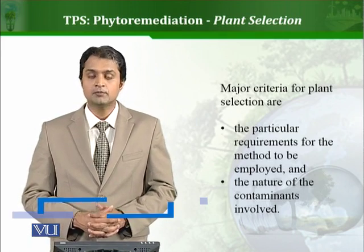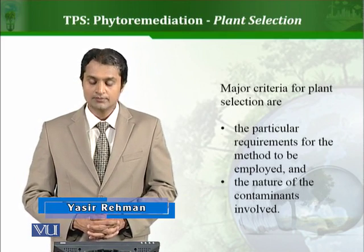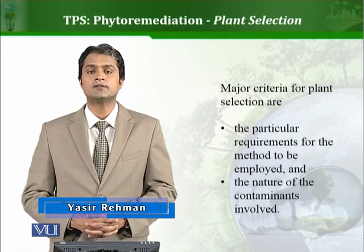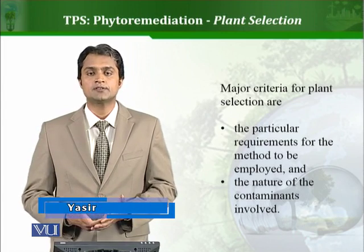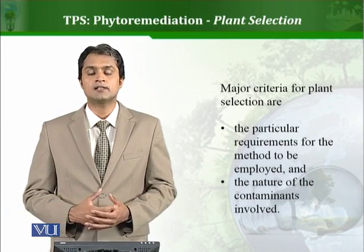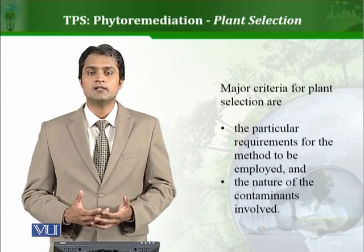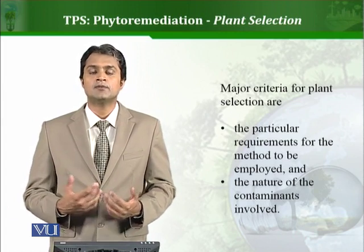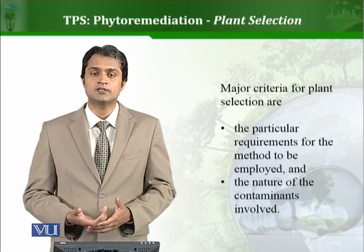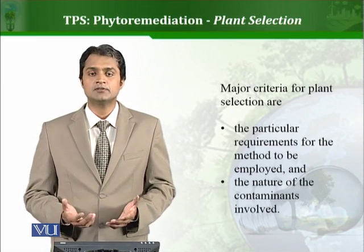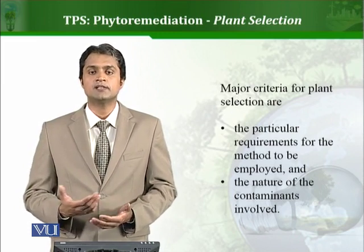The major criteria for plant selection are the particular requirements for the method to be employed and the nature of the contaminants involved. First of all, we will look at the contaminants — what they are, what their concentration is, what the site characteristics are, what the climate is like, and what kind of approach we are using, whether engineering work is required or not. Keeping all these things in mind, we will choose plants.